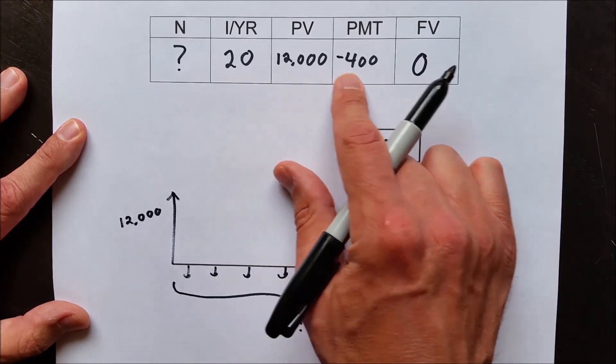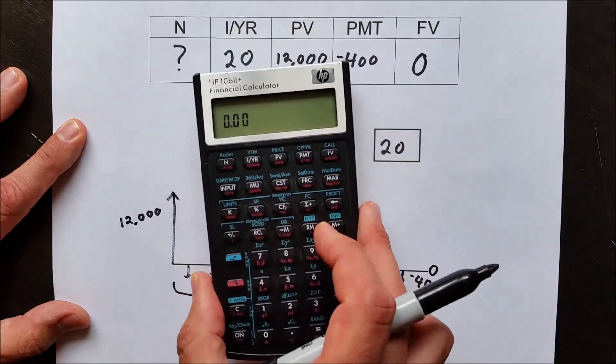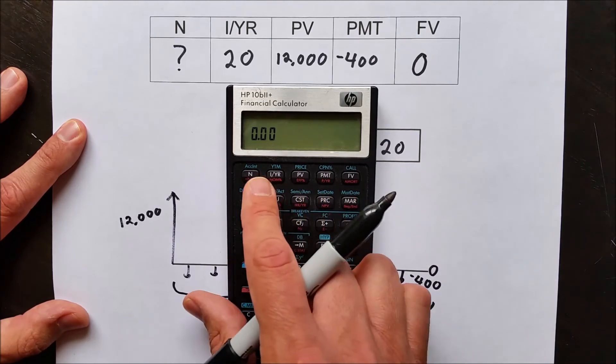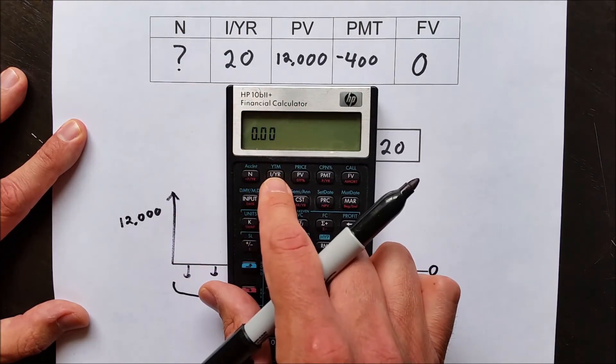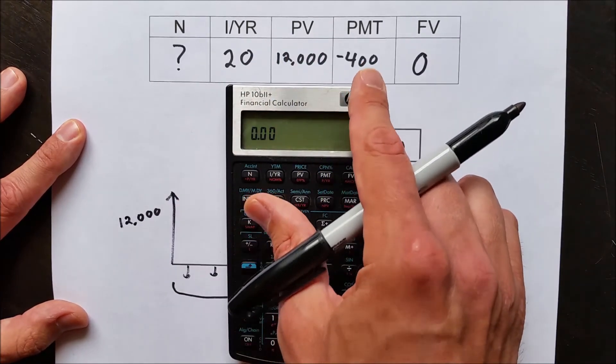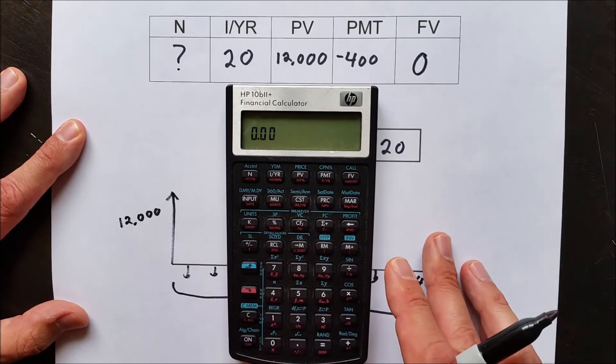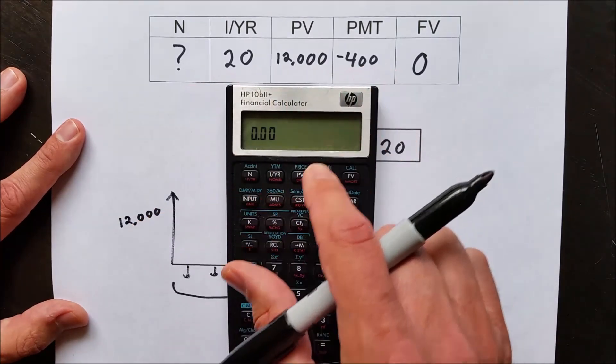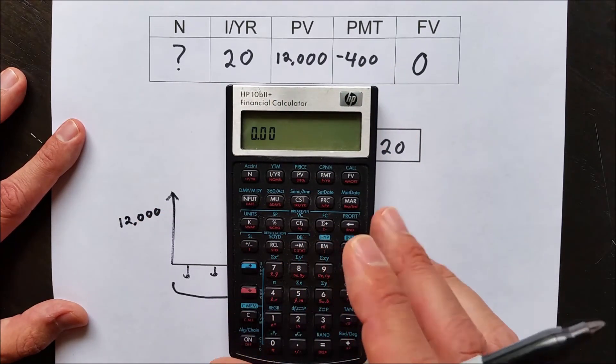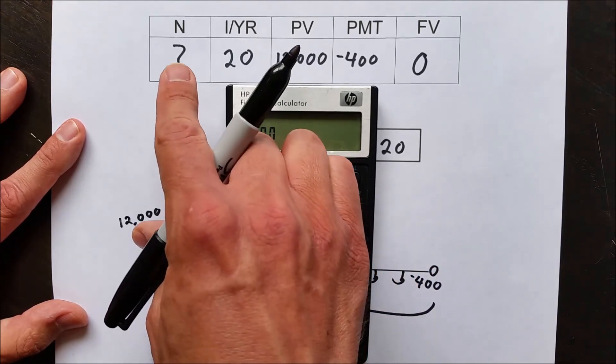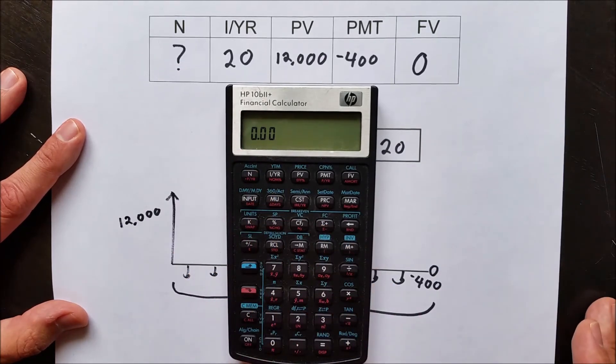Now that we know these four, we solve for the fifth. So now we have the financial calculator, the Hewlett-Packard 10BII financial calculator. You'll notice N corresponds to N, IYR here, present value is the same up here, PMT, and FV. All these buttons up top correspond to the calculator table. All we have to do now is enter the information from the calculator table into the calculator and let the calculator do the work. We'll go left to right, and we don't know how long it'll take Tom to pay off this credit card, so we're going to leave that blank.